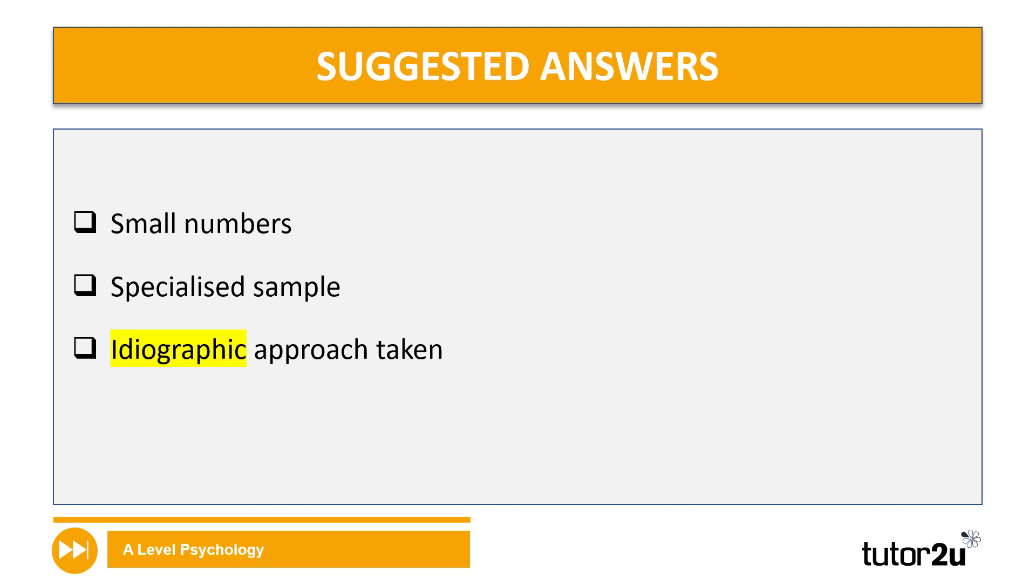Here's a couple that you could have used. You can appreciate that there may not be many people available to study, so we've got an issue with population validity straight away. In addition to this, they tend to be a specialized sample. Not only do they have specific pre-existing conditions, but they also now have undergone a very specialist surgery. So we've got questions about whether this sample can really represent the way typical brains communicate.